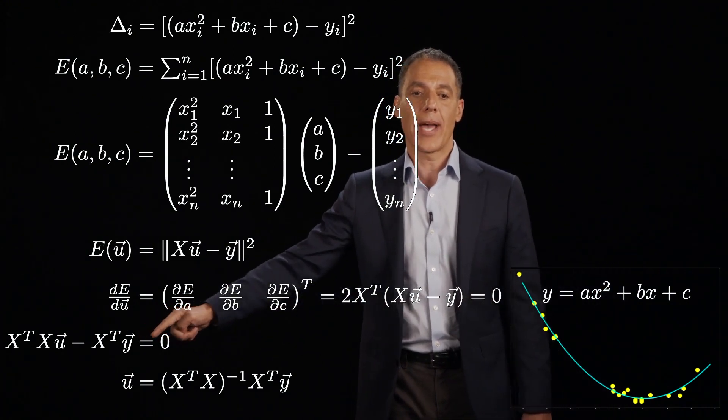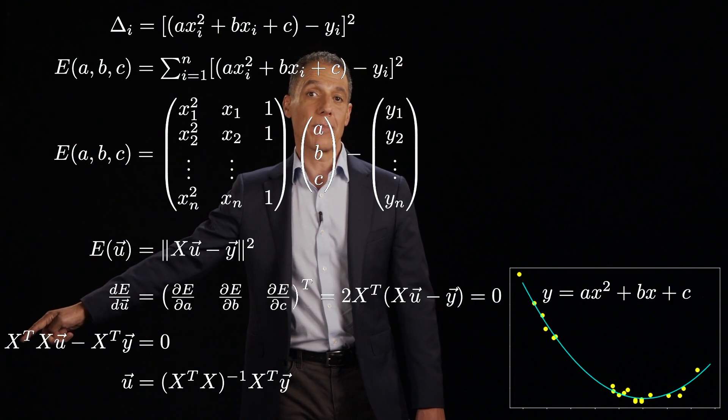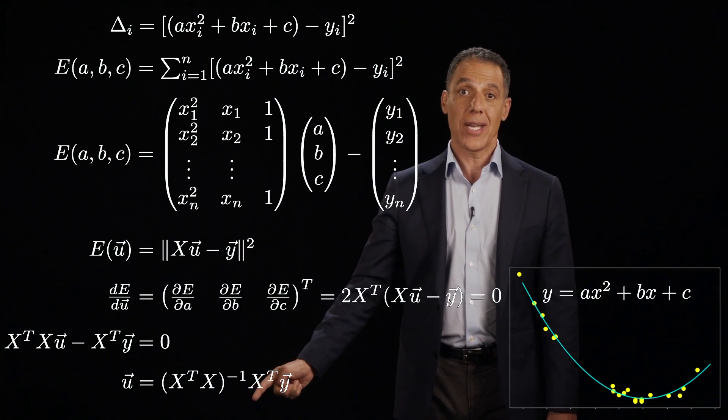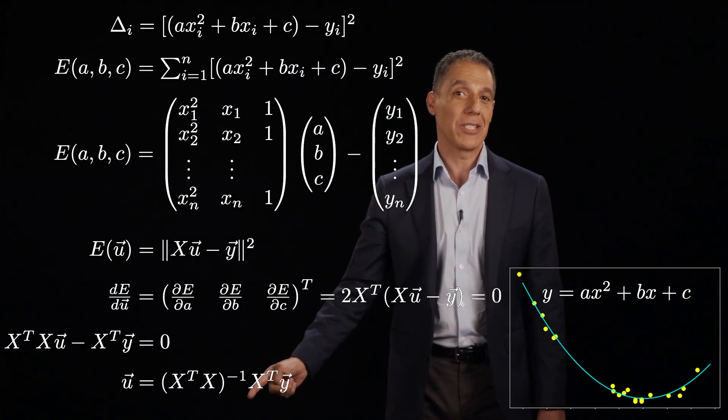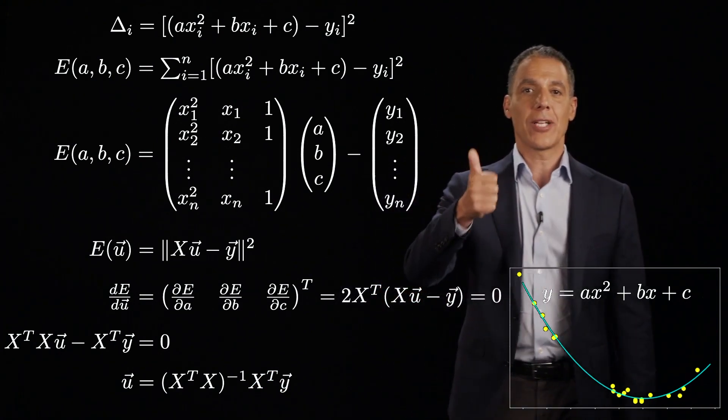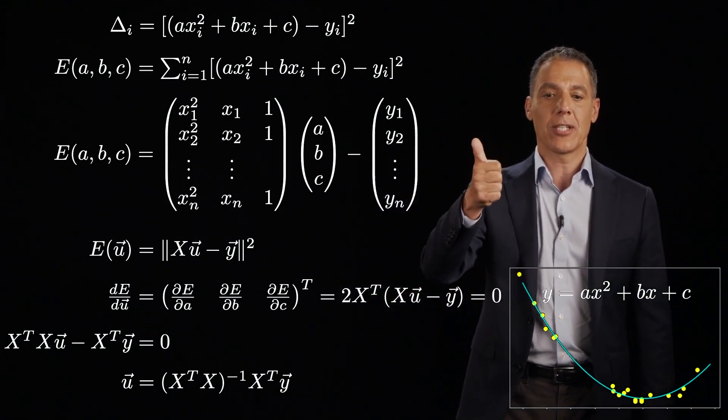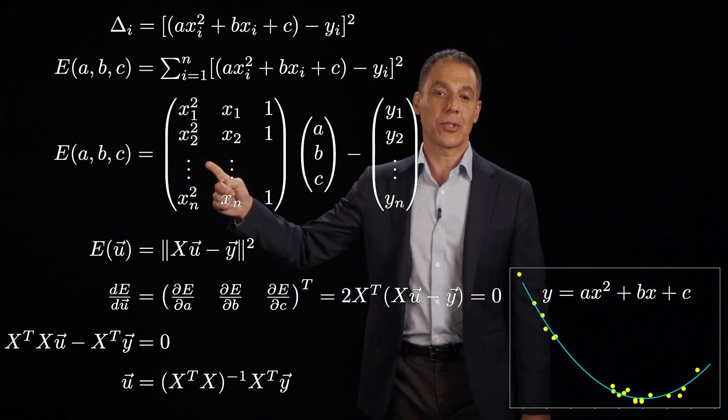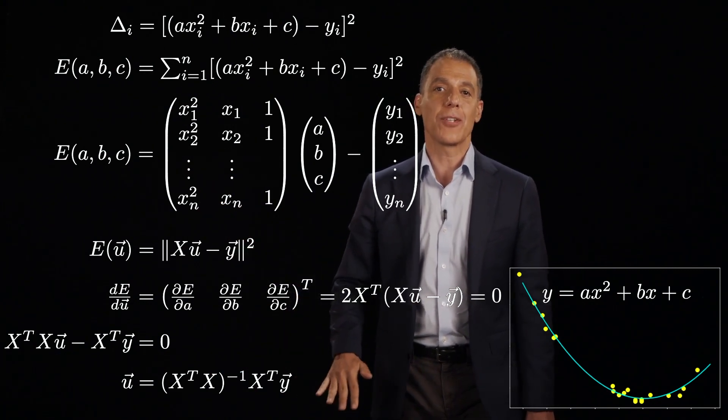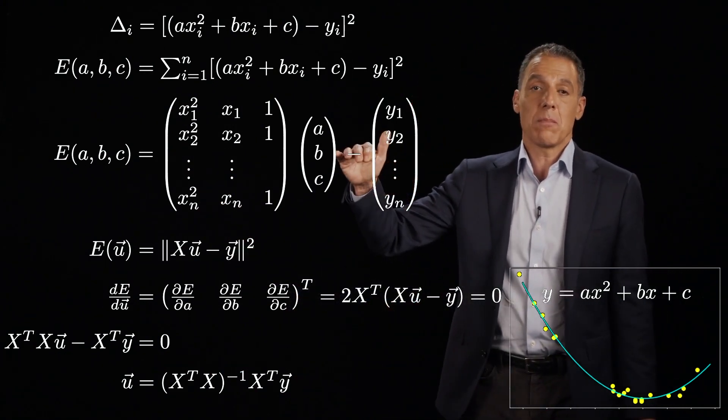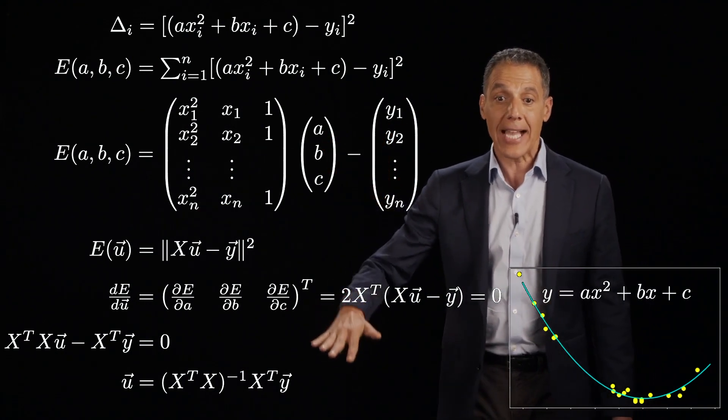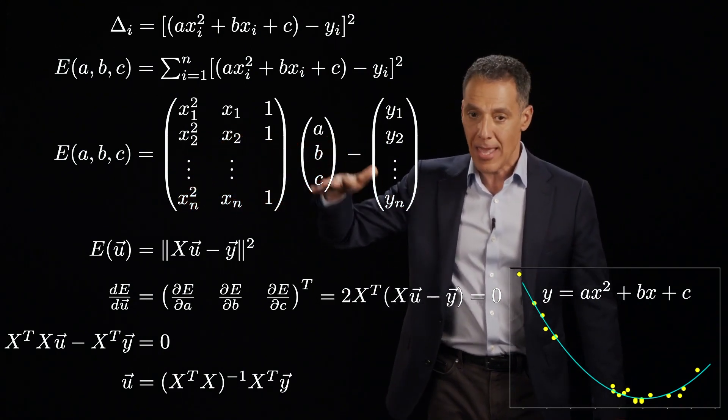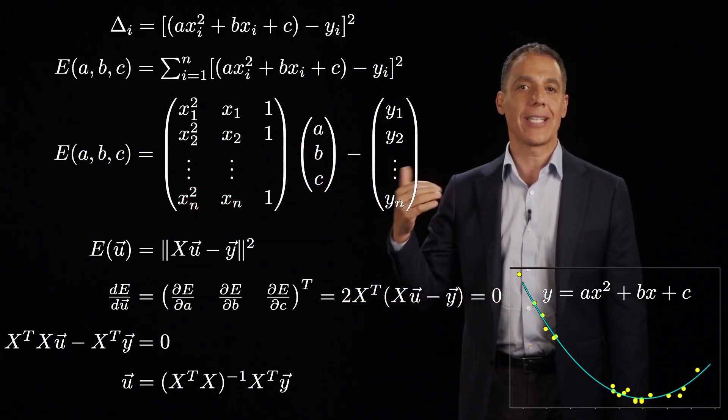I can, of course, bring this X transpose Y over to the other side. Now I've got a square 3 by 3 matrix here. I multiply by the inverse on the left, and I get my solution. By the way, this is exactly the same solution we got when we did slope and intercept. U is equal to X transpose X inverse times X transpose times Y. The only difference here is what has been packed into X. X has an extra column here with the X squared terms, but notice how beautiful this generalized.